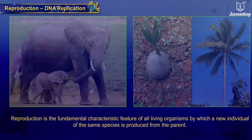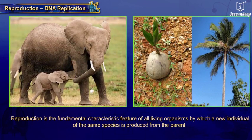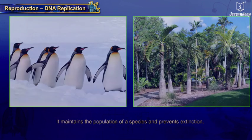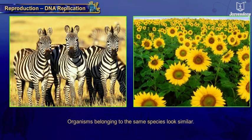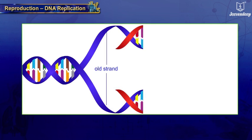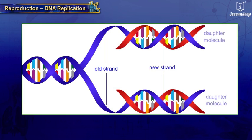Reproduction is the fundamental characteristic feature of all living organisms, by which a new individual of the same species is produced from the parent. It maintains the population of a species and prevents extinction. Organisms belonging to the same species look similar. A basic process in reproduction is the creation of a DNA copy.